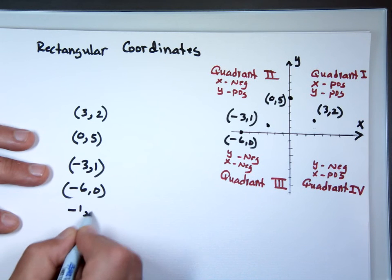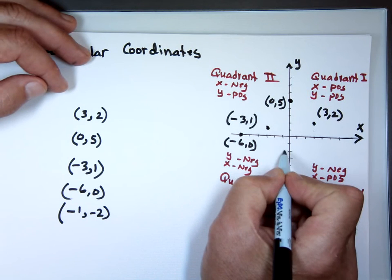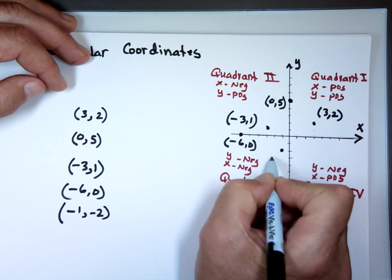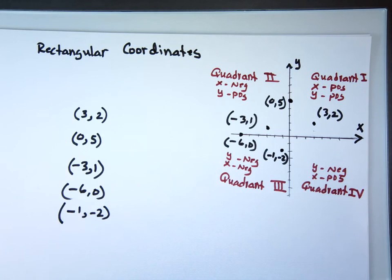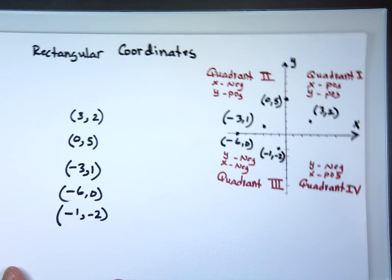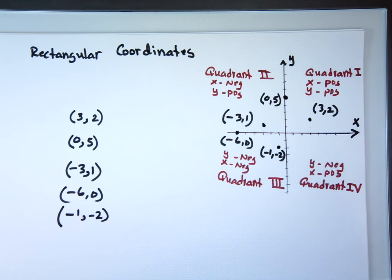Negative 1, negative 2. That's pretty cool. That's down here. I think you got the idea. We've seen it before. But we call this the rectangular coordinates. Some people call it the Cartesian coordinates. So don't be surprised if you hear the Cartesian coordinates.